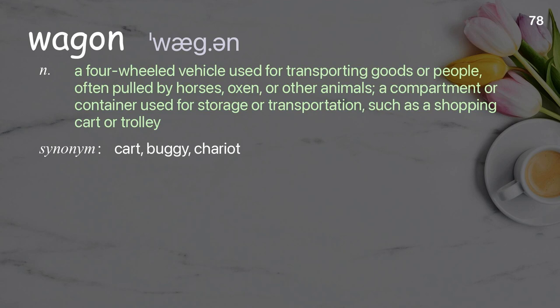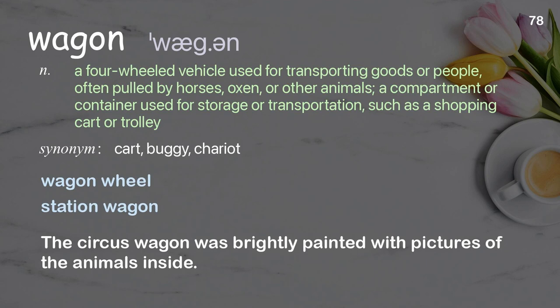Wagon: a four-wheeled vehicle used for transporting goods or people, often pulled by horses, oxen, or other animals; a compartment or container used for storage or transportation, such as a shopping cart or trolley. Examples: wagon wheel, station wagon. The circus wagon was brightly painted with pictures of the animals inside.